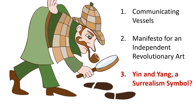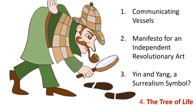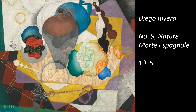Third, we're going to be looking at the yin-yang symbol, a symbol used in Chinese philosophy but also a symbol used in Diego Rivera's mural. We're going to try to find out if he's using the yin-yang symbol as a secret message for the surrealism movement. And finally, we'll look at the tree of life — a symbol used in Mexican culture and globally to connect the earth with the underworld and the celestial world.